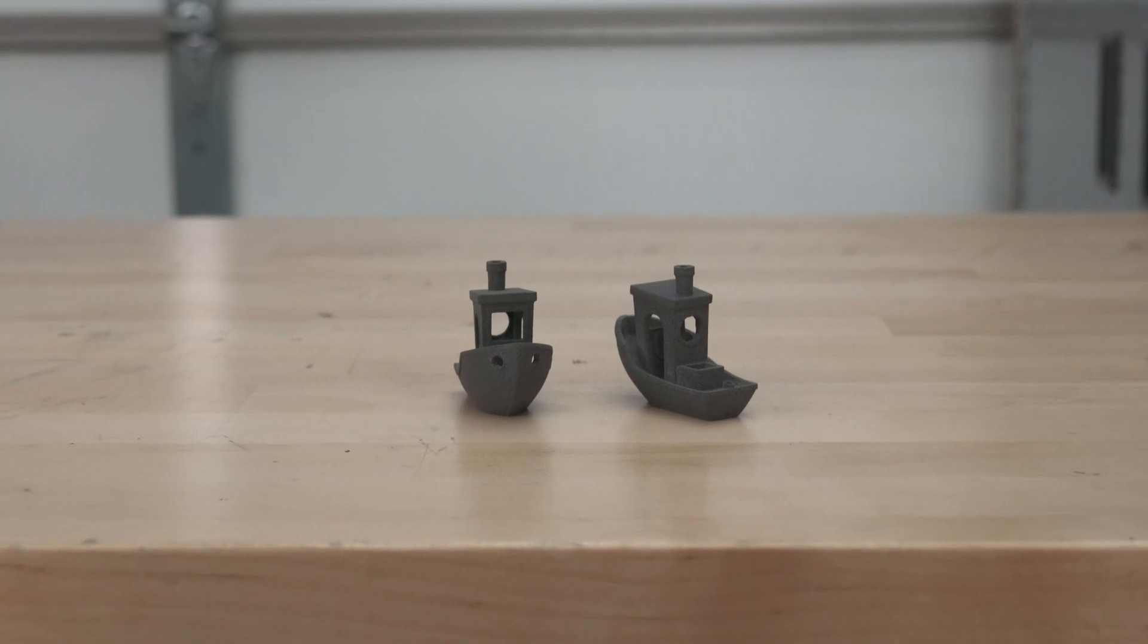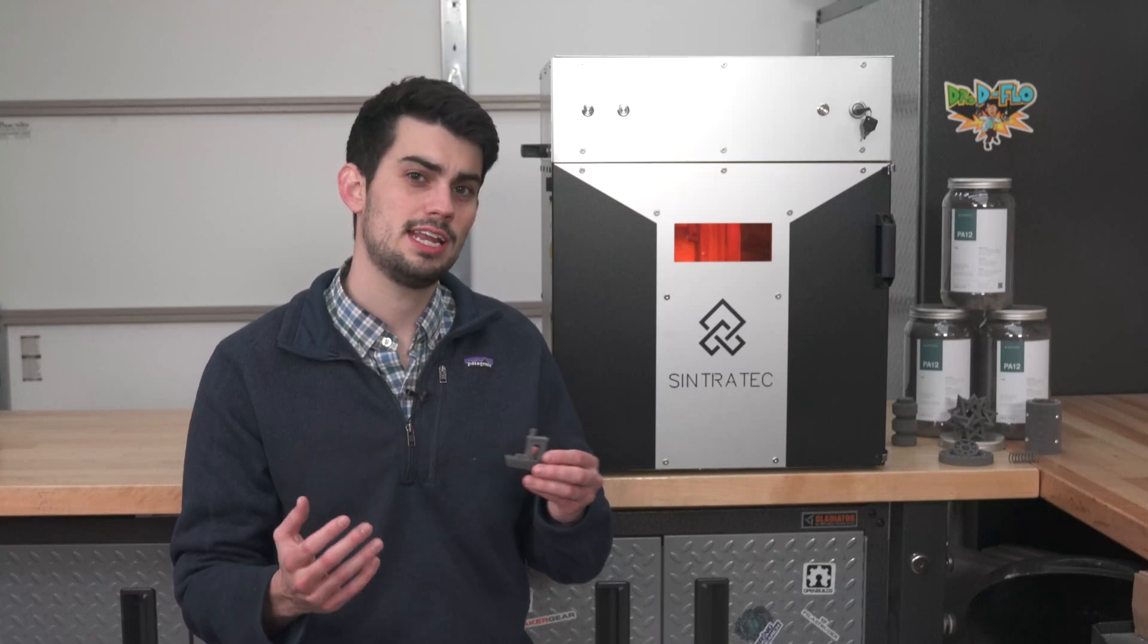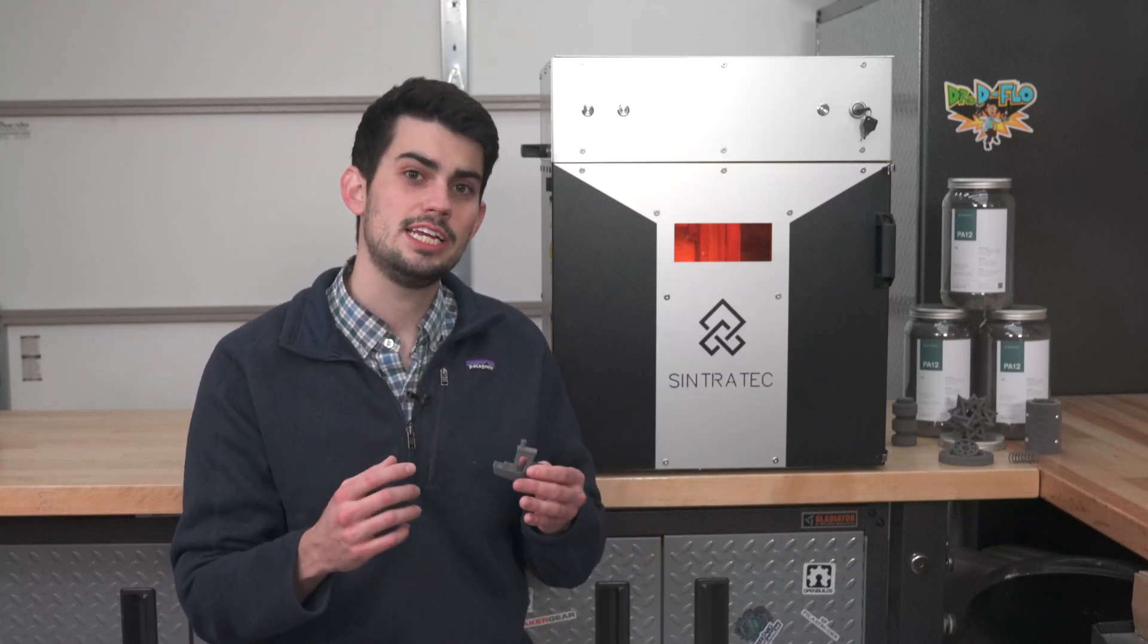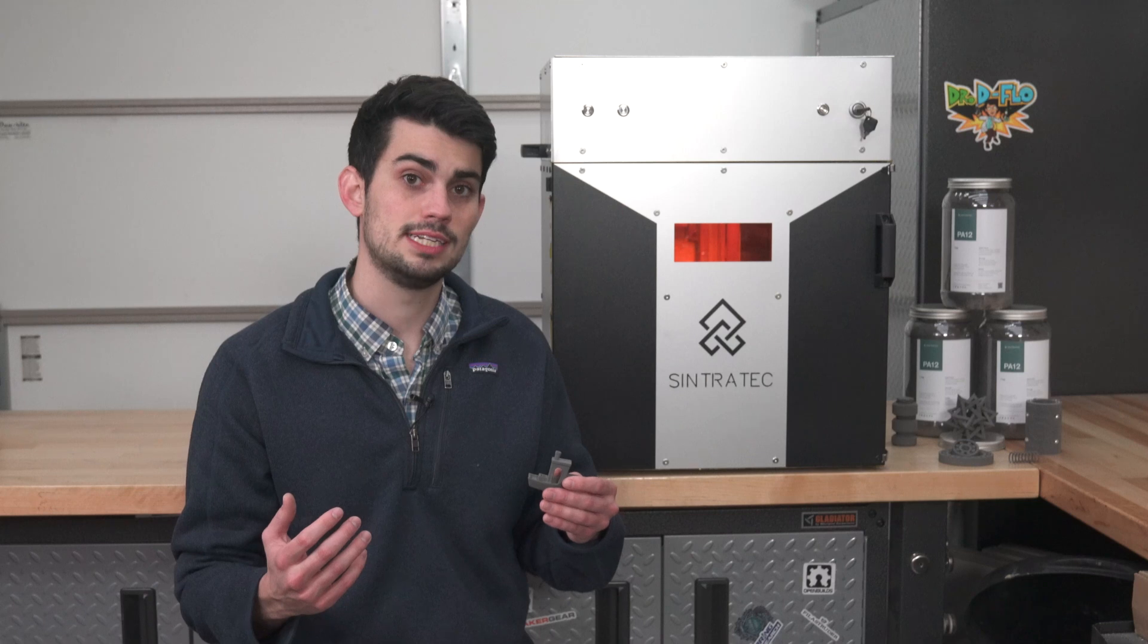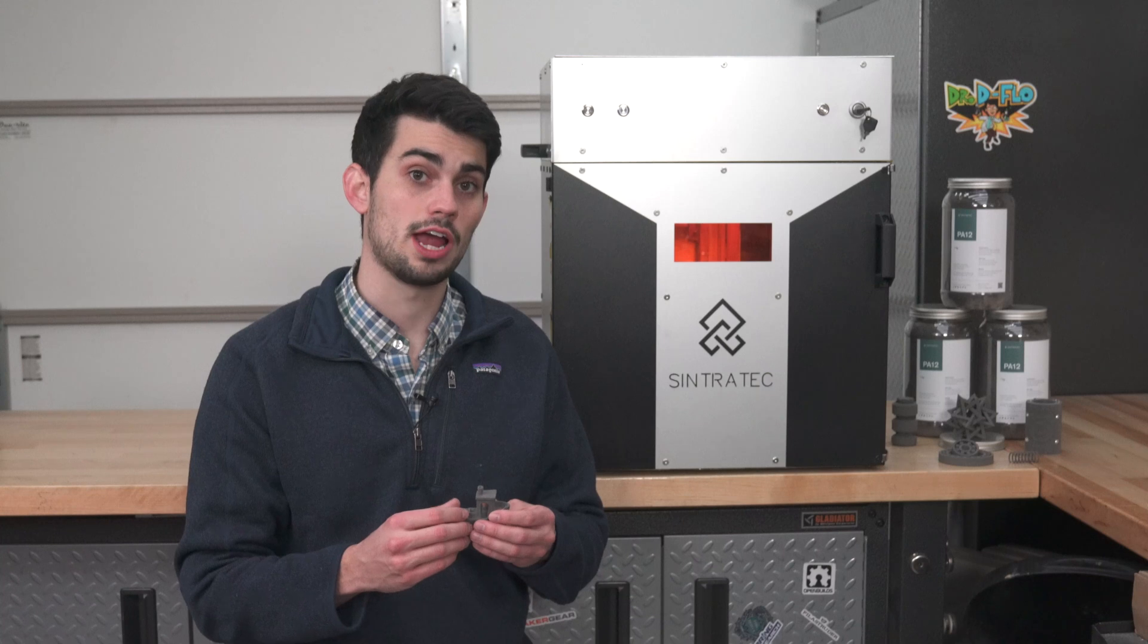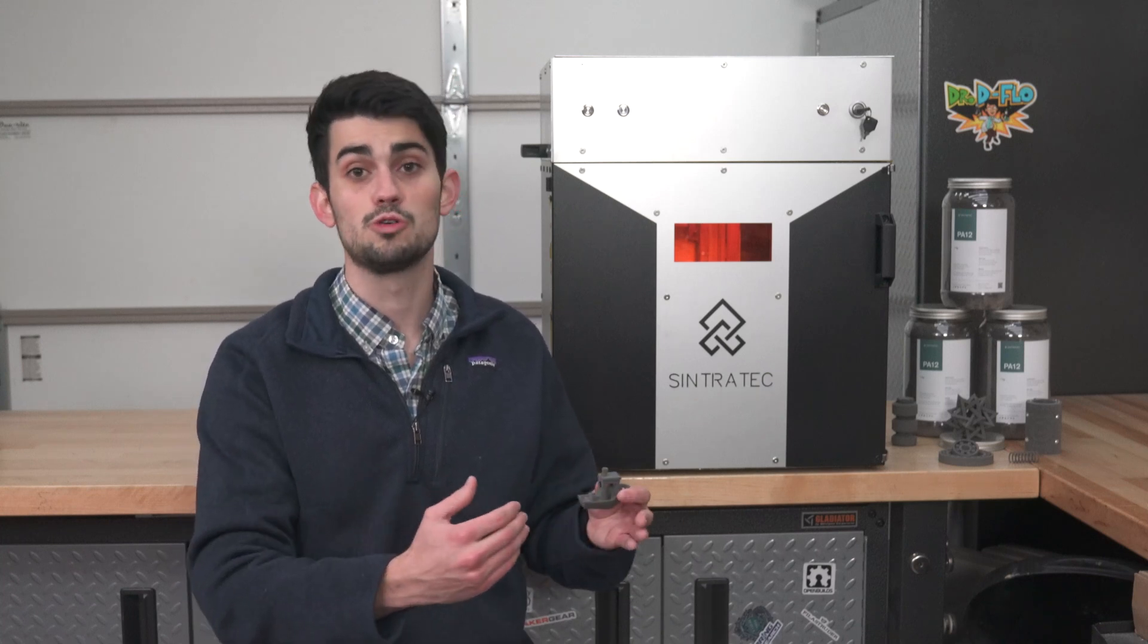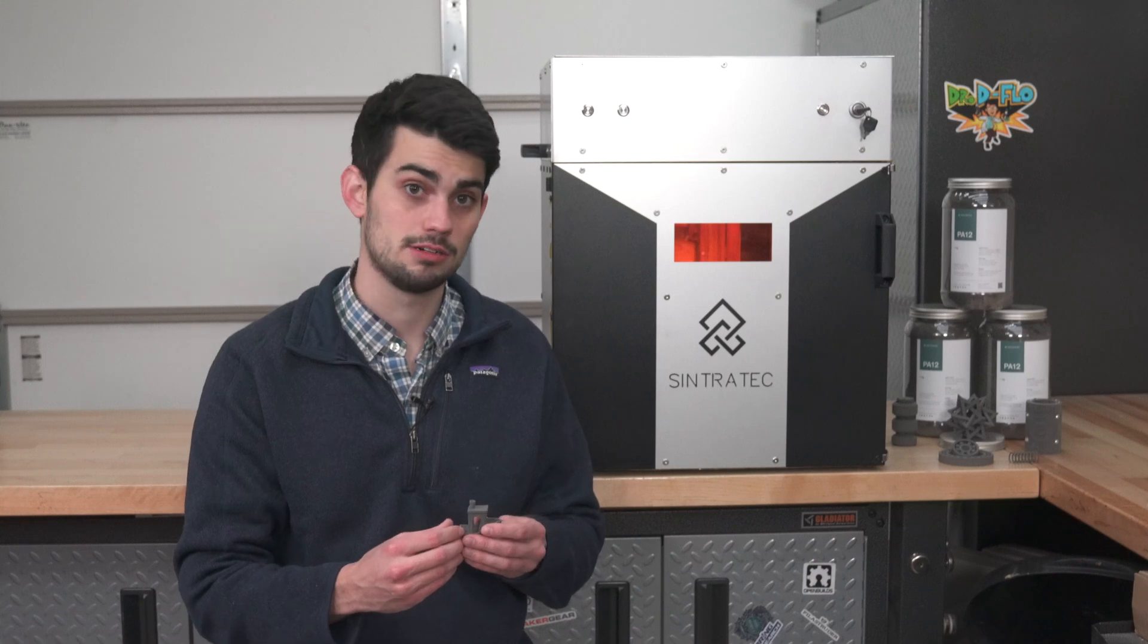If we look closely at this SLS printed Benchy, it's very difficult to discern the different layers that make up this model. Not only is this great aesthetically, but this tight adhesion between layers is why SLS prints exhibit near isotropic mechanical properties. Put simply, these prints are strong in all directions, which is not the case for parts printed with filament, which will be weakest in the plane perpendicular to the layers.